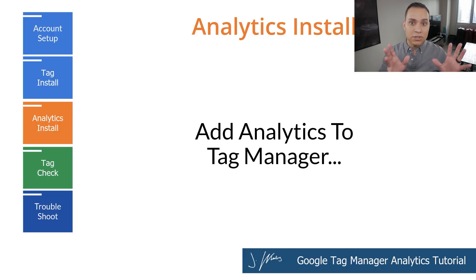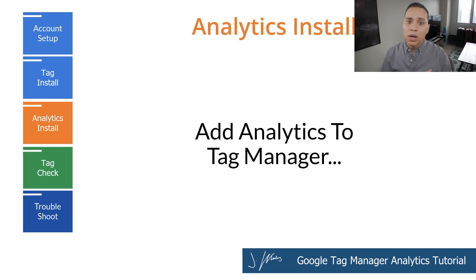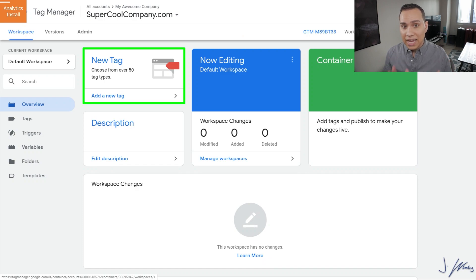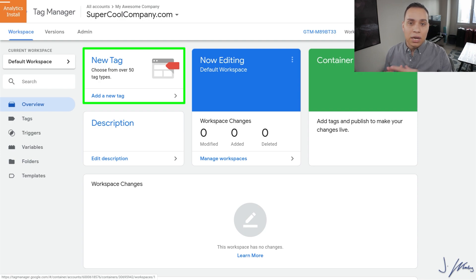Once we've done that, Google Tag Manager is actually on our site. When we get to tag check, I'll show you how to make sure it was actually installed properly. But for now we're going to leave it alone, because we need to put something inside of tag manager in order to start checking that it's actually working correctly. Now that we have the tag manager code on our site, we don't ever have to go back into our site settings to add any more codes. We're going to do everything moving forward inside of Google Tag Manager.